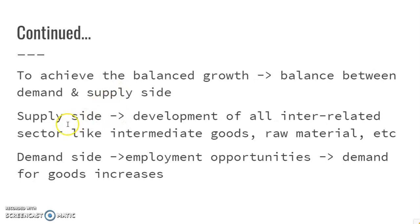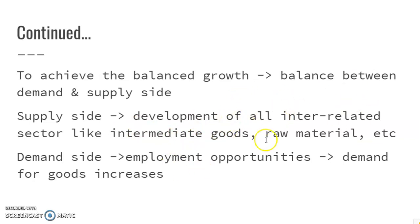The supply side emphasizes the simultaneous development of all the interrelated sectors. For instance, if we produce some goods, for that we need the raw materials and the intermediate goods. Hence, the development of all interrelated sectors like intermediate goods and raw materials should be there.